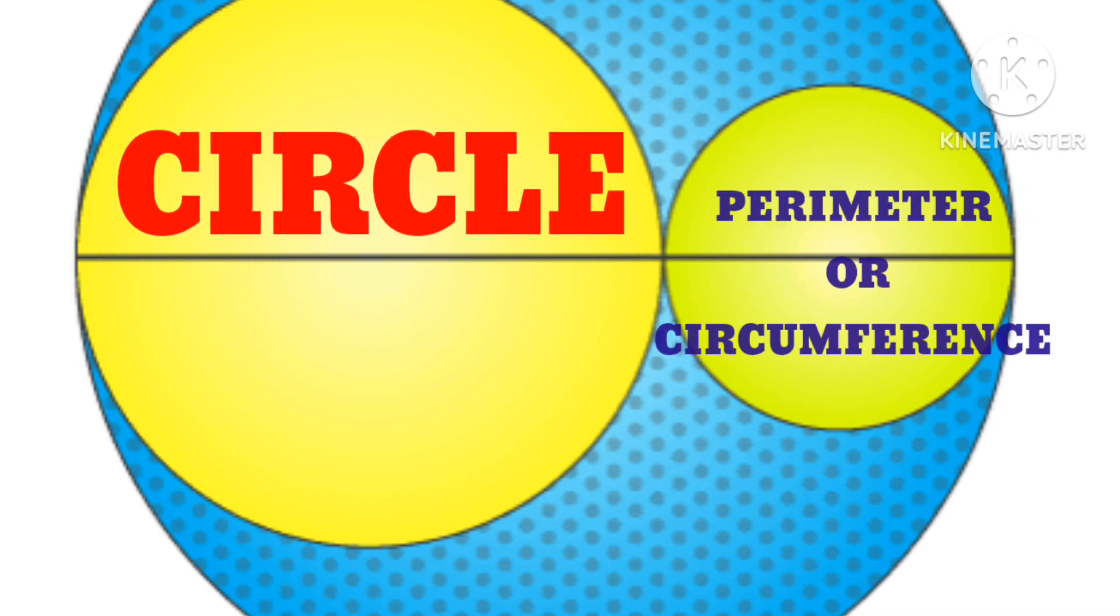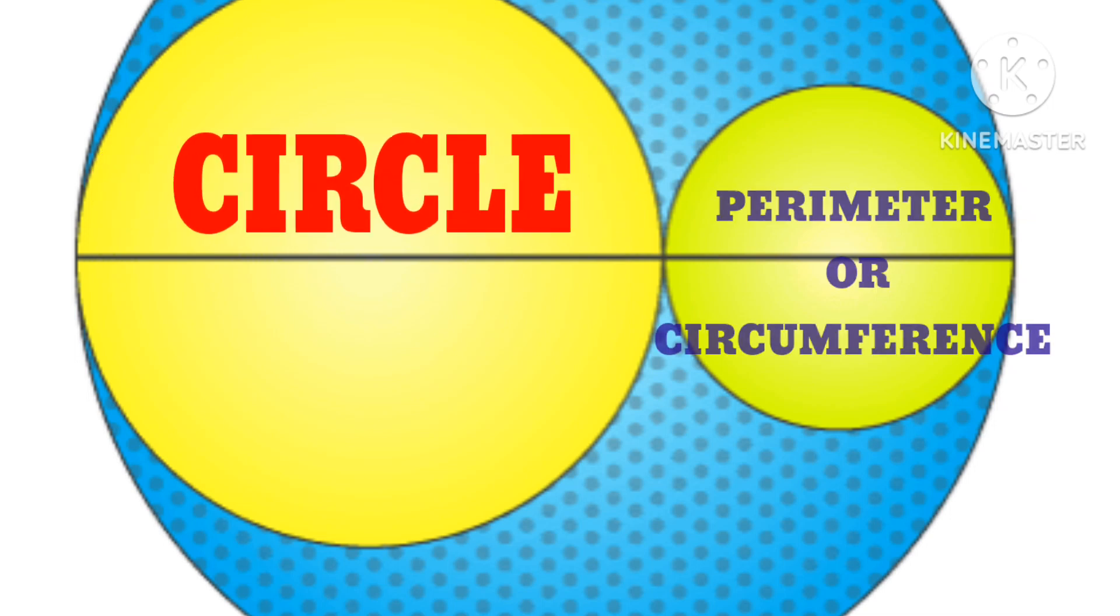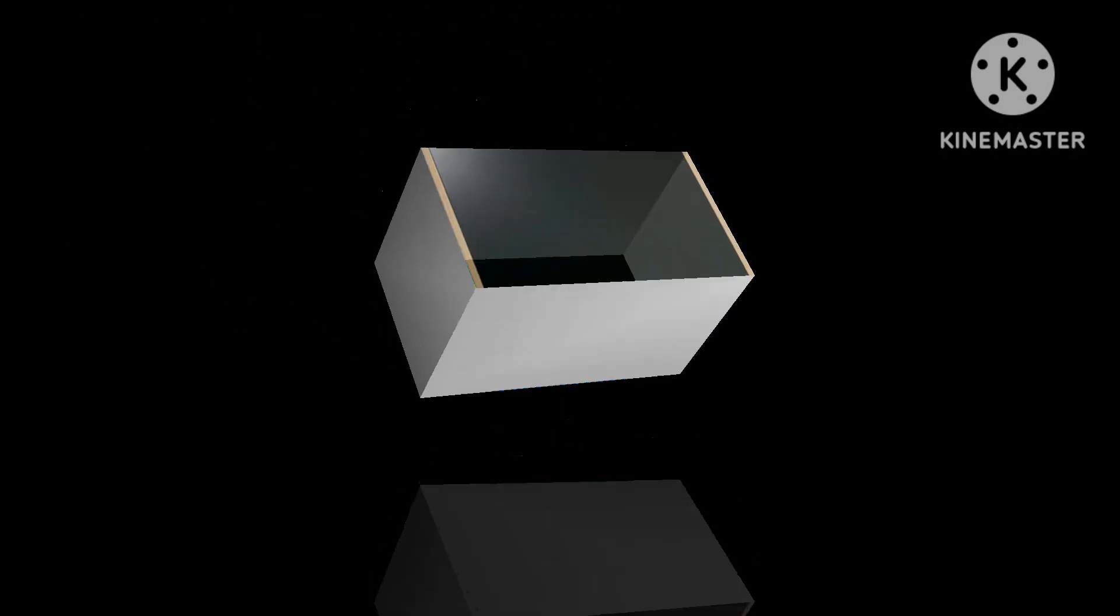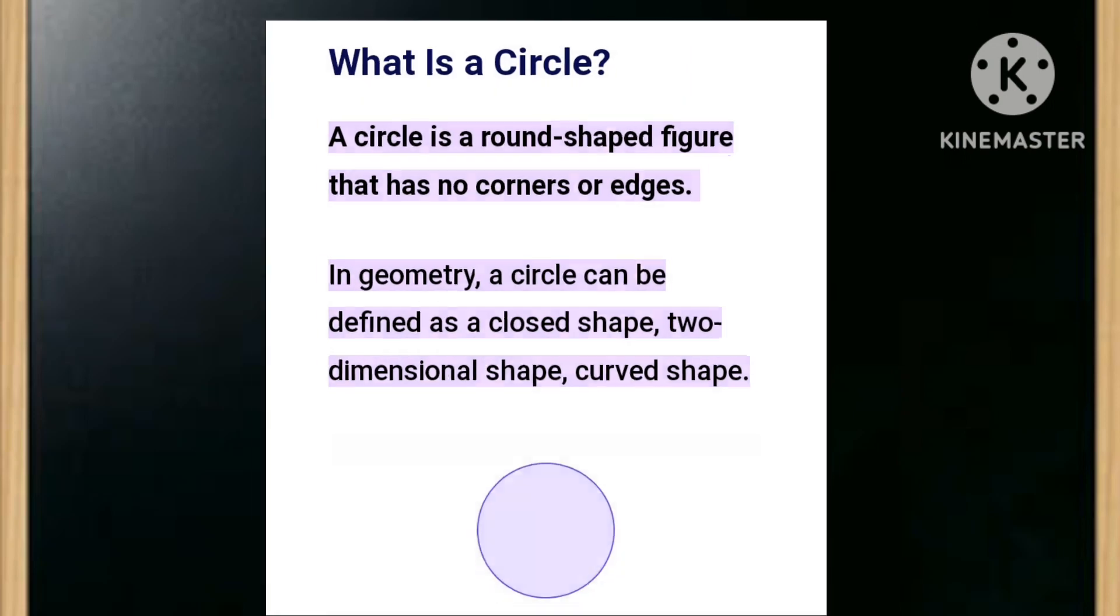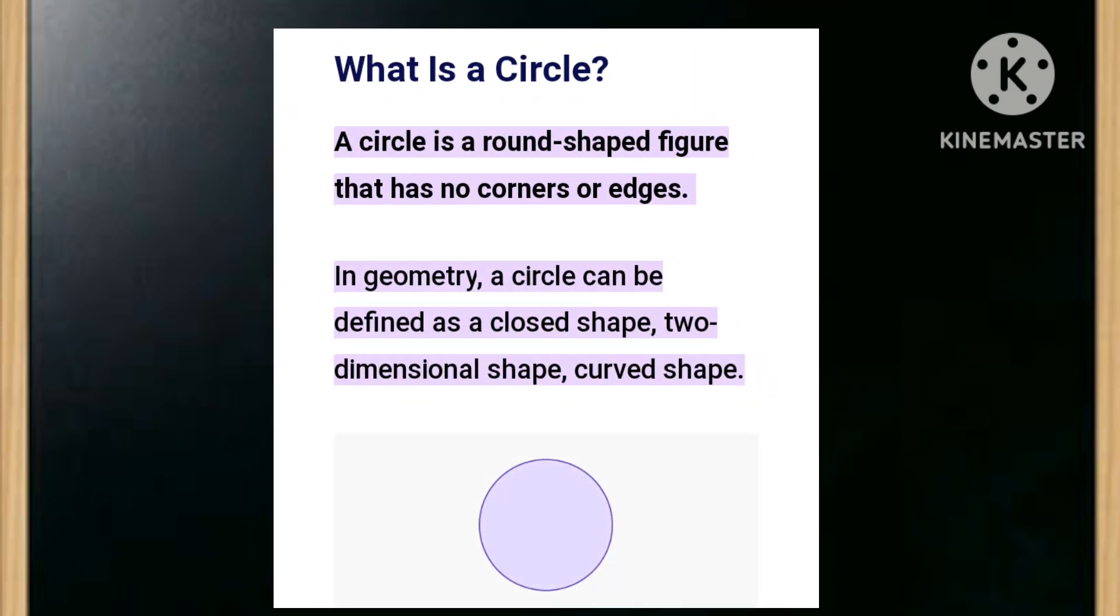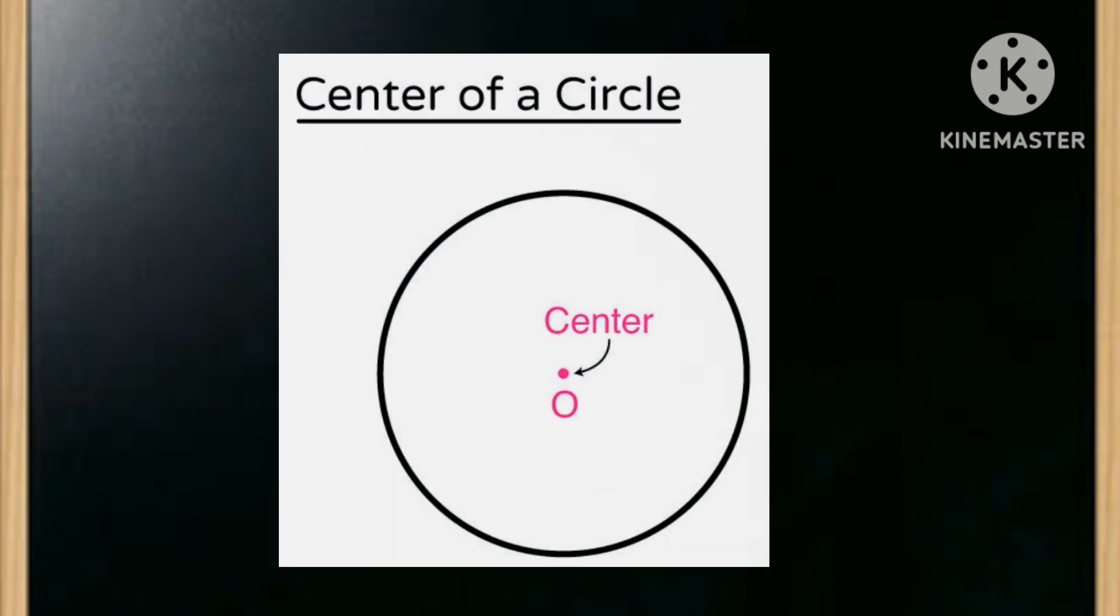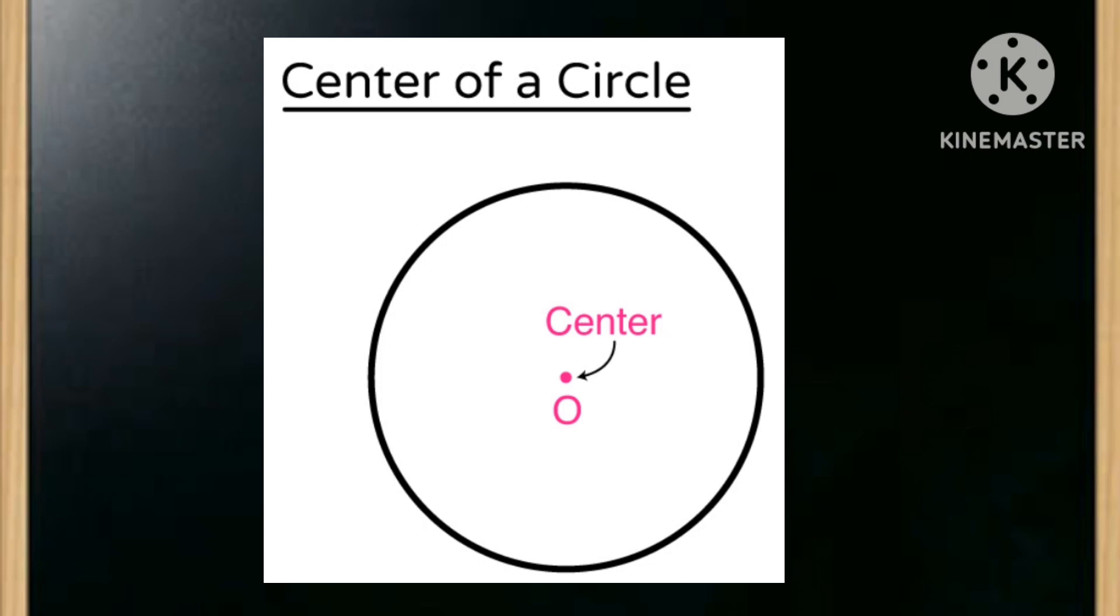Let's discuss what is a circle. A circle is a round shaped figure that has no corners or edges. In geometry, a circle can be defined as a closed shape, two-dimensional shape, and curved shape. The center of a circle is the middle point of a circle from which all of the points on the circle will be the same distance.